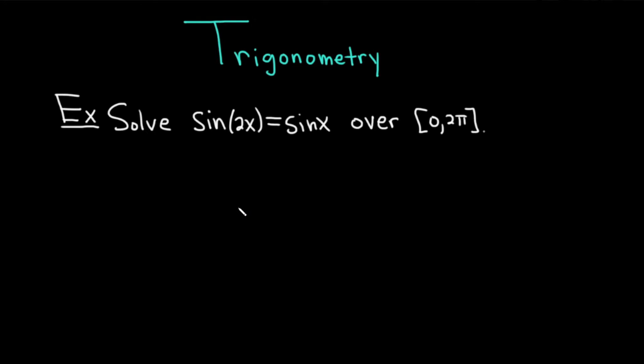Hi everyone. It's the Mathsorcerer here with Chegg. In this video, we're going to discuss trigonometry. Let's do an example. The question is to solve this equation: sine of 2x equals sine x over the interval from 0 to 2π.